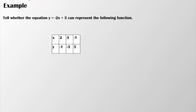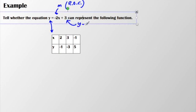Now let's take a look at this example. I want to tell whether the equation y equals negative 2x plus 3 can represent the following function. Here I have a table. I want to see if this table relates to this linear function. I know this is a line. I know this is my slope, negative 2, which we've established as a rate of change. And I know that this is my y-intercept.